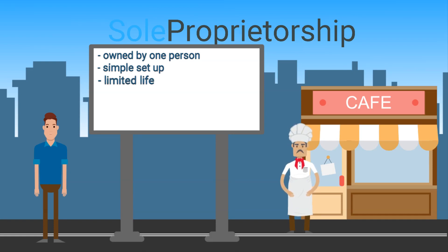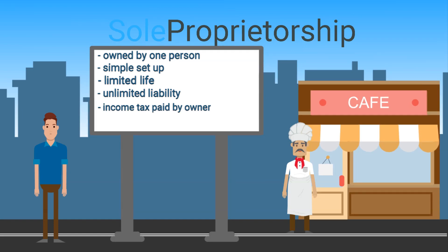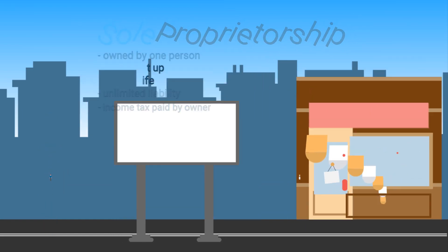Limited life means when the owner stops working, so ends the business. There is unlimited liability to the owner — they can lose personal assets in the settlement of business debts, and business profits are taxed in the hands of the individual owner.